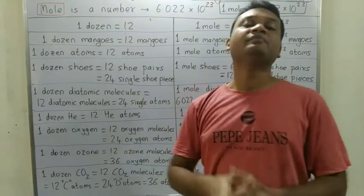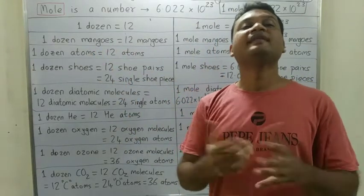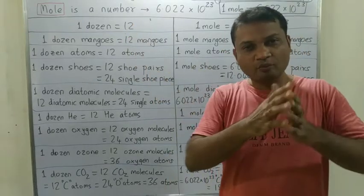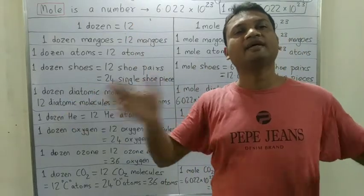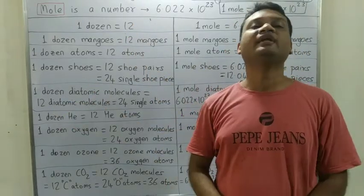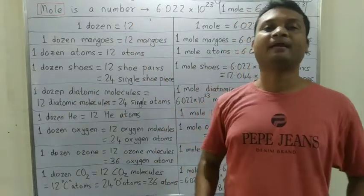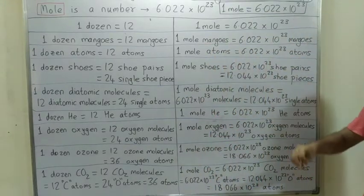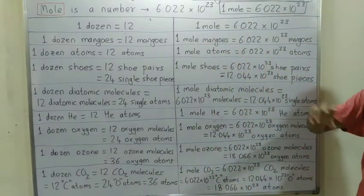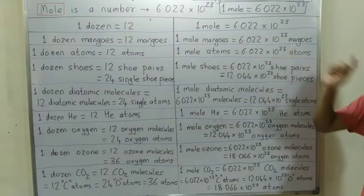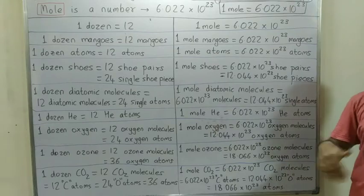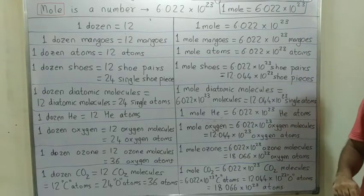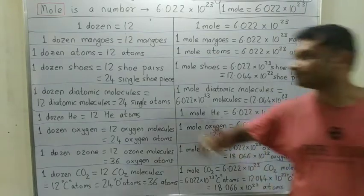Ek dozen atoms meinne bola, to kitne atoms? 12 atoms. But atoms to bahot saare hote hain, to hum logically bada number lagega. So we talk about one mole atoms, which is 6.022 into 10 raise to 23 atoms. To itne saare atoms hain.